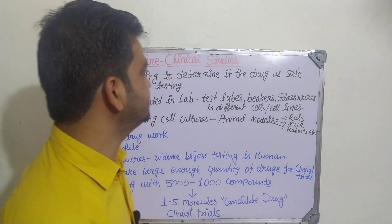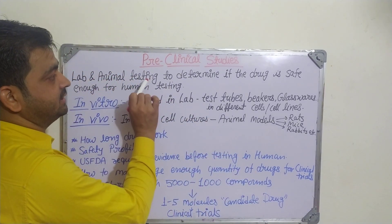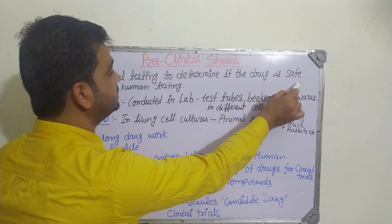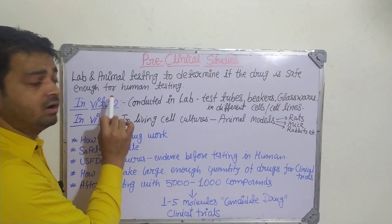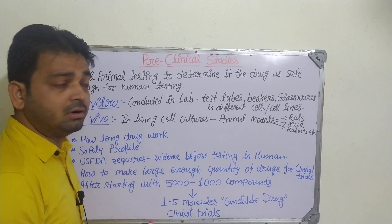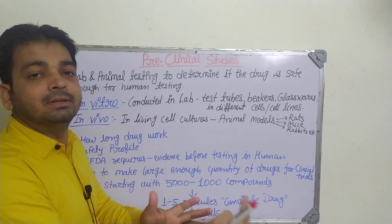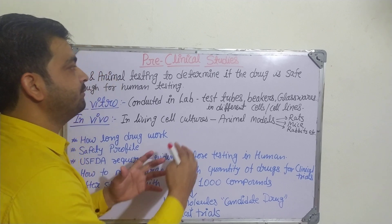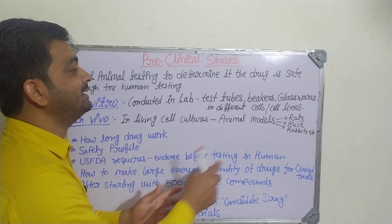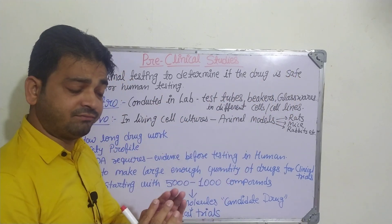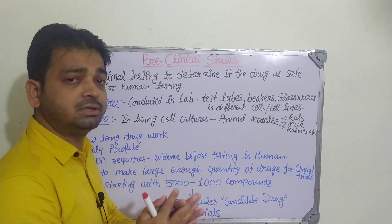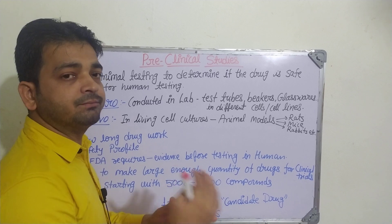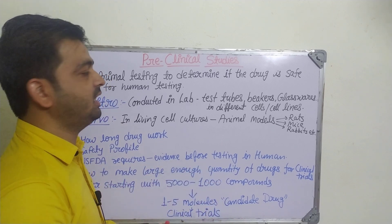So preclinical studies are basically lab and animal testing to determine if the drug is safe enough for human testing, because after that there will be clinical trials — phase one, phase two, phase three, and phase four. Before that, it has to be ensured that the drug is safe enough. It should also have some kinds of activity. Then only we can proceed further; otherwise, we need to stop at the preclinical stage itself.